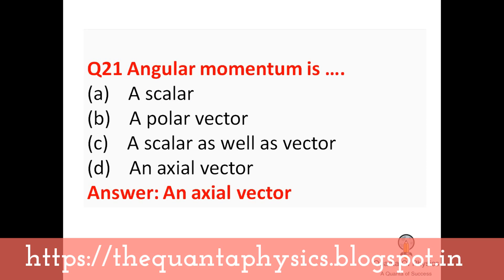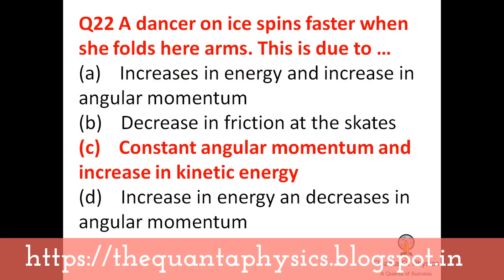Angular momentum is an axial vector. Vectors are of two types: polar vectors and axial vectors. Angular momentum is an axial vector. A dancer on ice spins faster when she folds her arms — this is due to conservation of angular momentum and increasing kinetic energy.